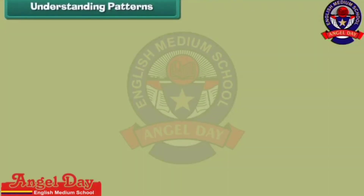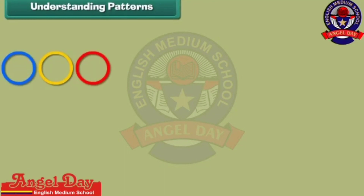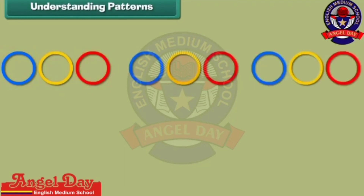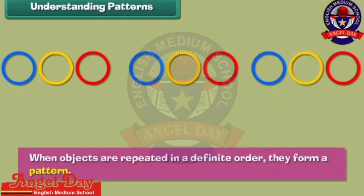Understanding patterns. Look at this arrangement of rings. A blue ring is followed by a yellow ring, followed by a red ring. This arrangement is repeated three times. When objects are repeated in a definite order, they form a pattern.